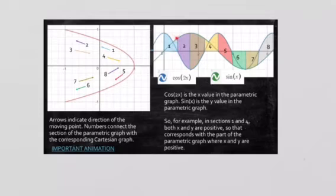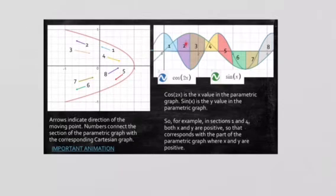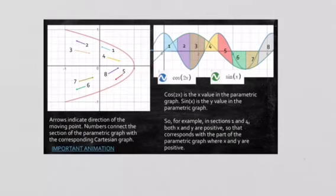At the end of section 1 we hit section 2, where X has gone negative but Y is positive. At the end of section 2, X is negative 1 and Y is positive 1, so we're all the way up here. Section 3 is just a mirror of section 2 reflected — X value goes back toward 0 and Y gets smaller. At the end of section 3, X goes positive again and Y is still positive but approaching 0 as X slowly gets bigger.